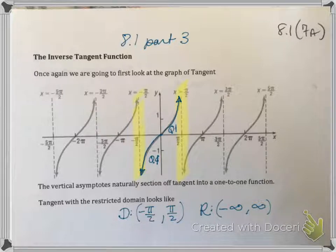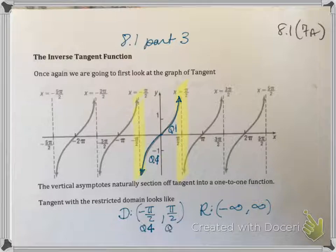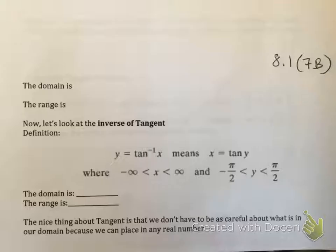You're going to actually like inverse tangent because whatever the domain is becomes the range and whatever the range is becomes the domain. So the domain for the inverse tangent function is negative infinity to positive infinity — we don't have to check if values are in the domain. But your answer must be in quadrant 4 if the value is negative, and quadrant 1 if the value is positive.